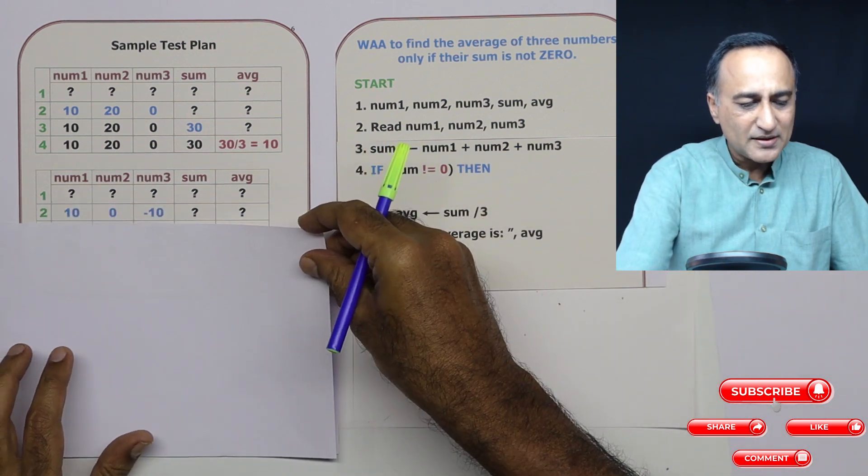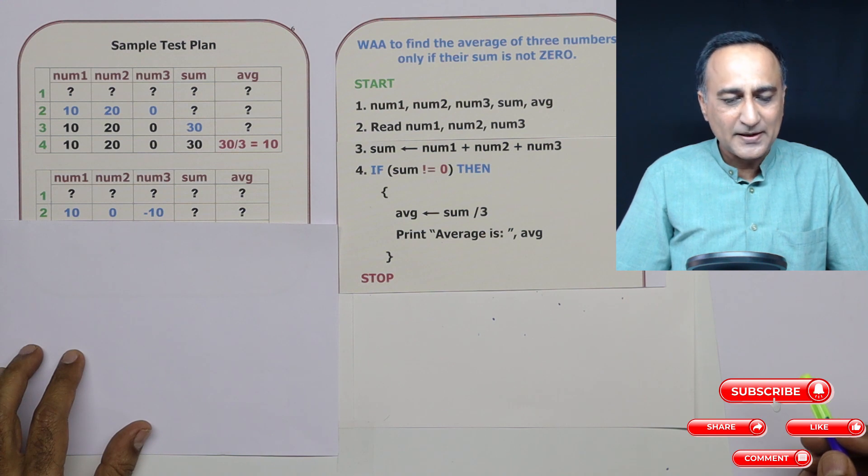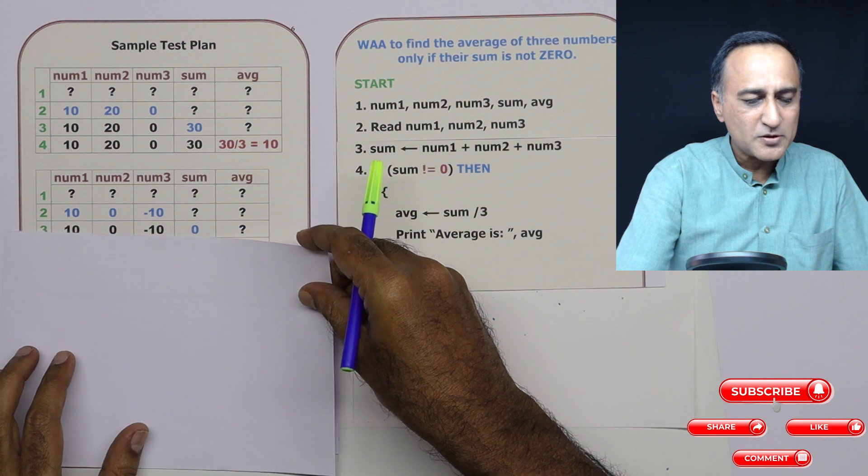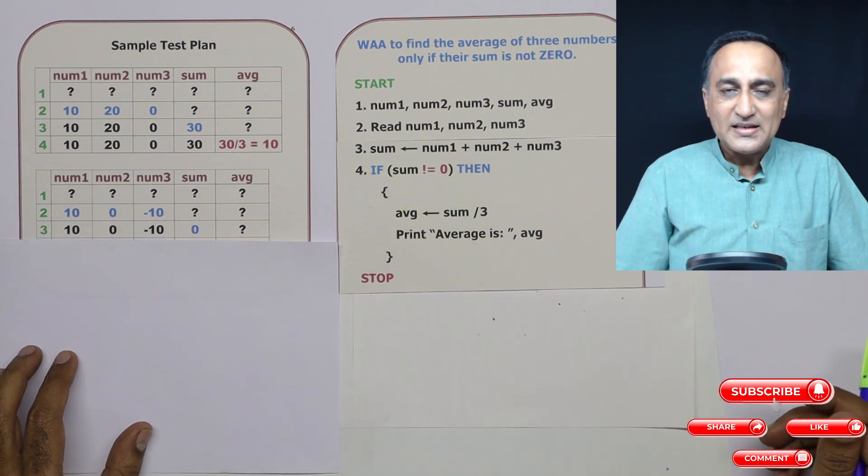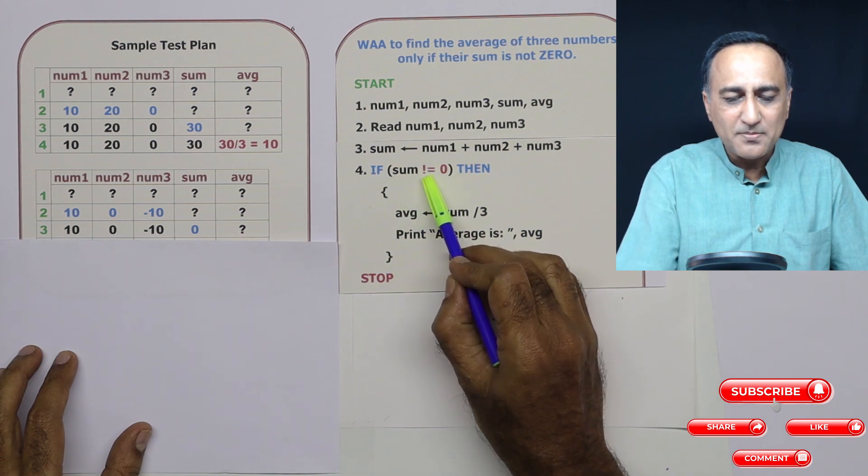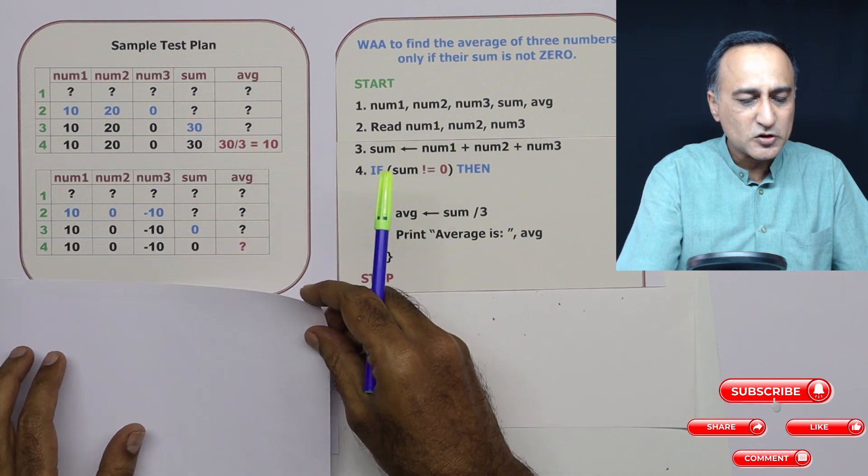Then what I'm doing here is the user is entering 10, zero and minus 10. In the third step, I am calculating sum. Sum now happens to come as zero. Since the sum is zero, this condition becomes false. If sum equal to zero, then this is not true. So straight away I will come and stop.